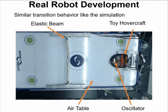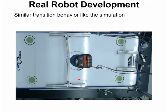And besides simulation, I also tried to build a real robot to try this idea. This is simply made by a toy hovercraft and an air table to reduce the friction, and an oscillator to provide a random force. And the experiment shows a similar behavior like the simulation.